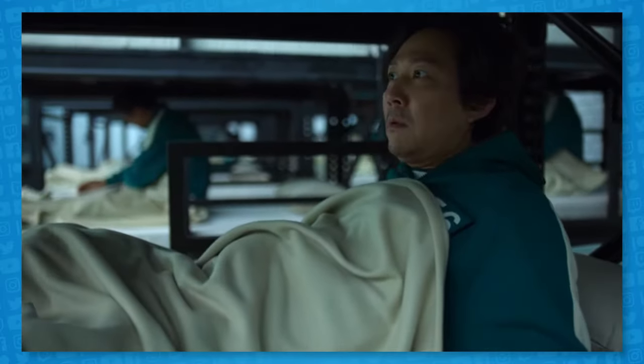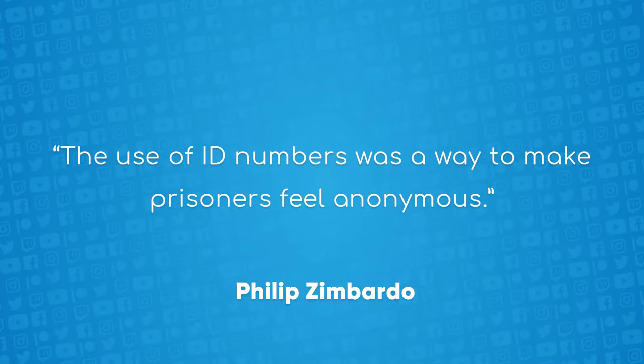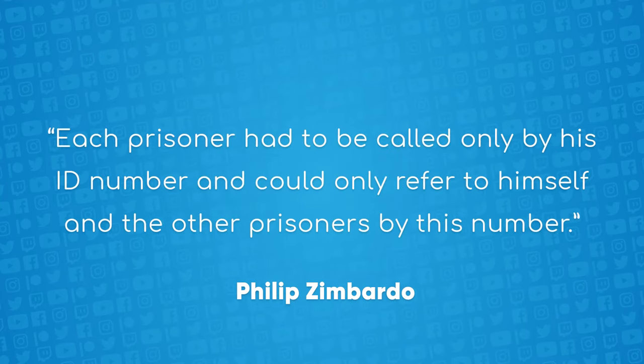In the show, our beloved characters wake up in a strange place dressed exactly alike with a unique number assigned to them, just like the Stanford Prison Experiment. Zimbardo says the use of ID numbers was a way to make prisoners feel anonymous. Each prisoner had to be called only by his ID number and could only refer to himself and the other prisoners by this number. This, among other physical changes, were designed to minimize their individuality. It was also a way of getting them to comply with the coercive rules of this experiment.